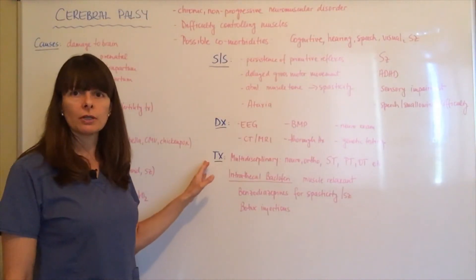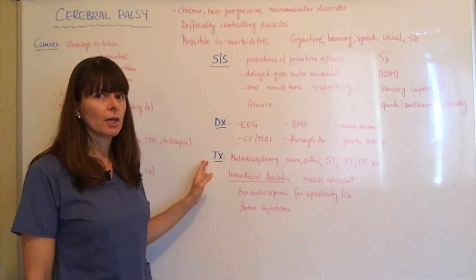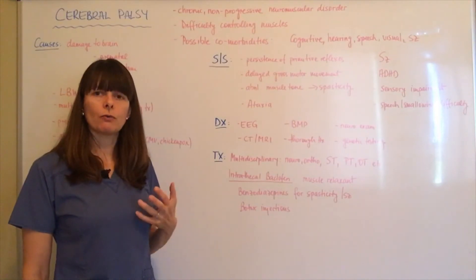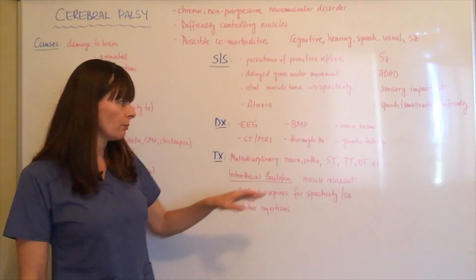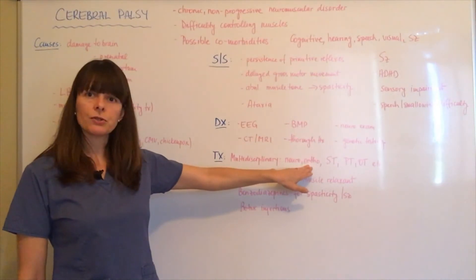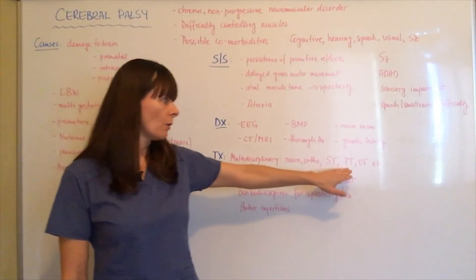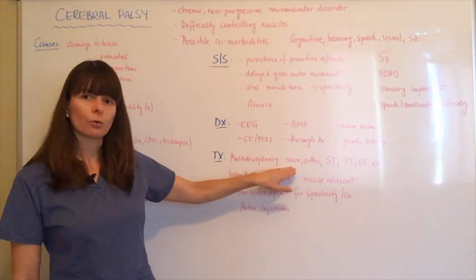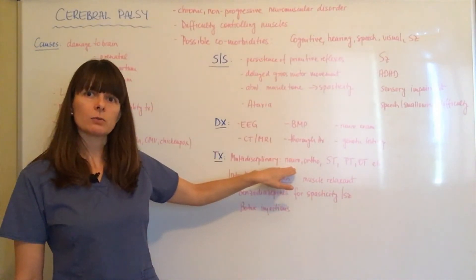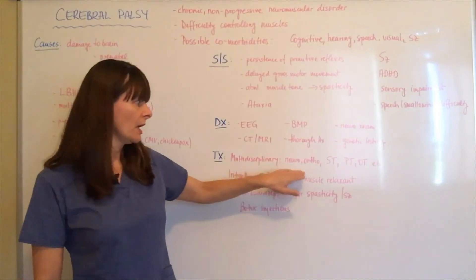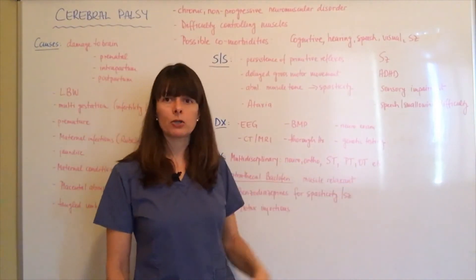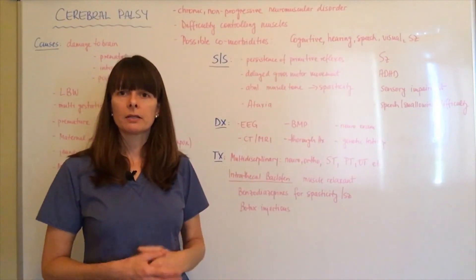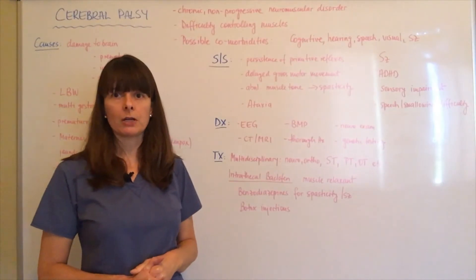Treatment usually involves a multidisciplinary approach because many parts of the body are affected. For the physical component, there will be an orthopedic surgeon and physical therapy involved. If there's cognitive impairment, neurologists and maybe a neurosurgeon may be involved, as well as a speech therapist, an occupational therapist, and many more disciplines that can help this child achieve optimal function.